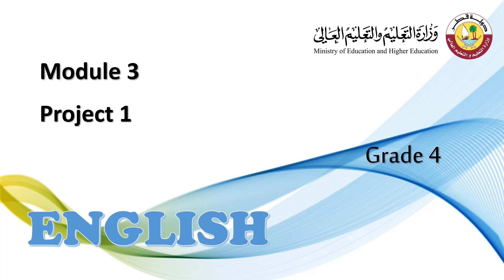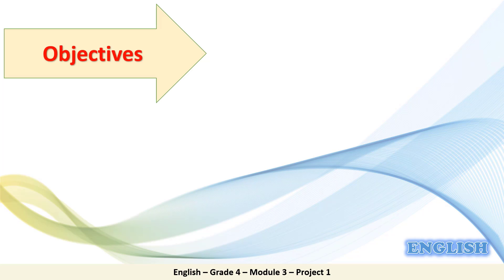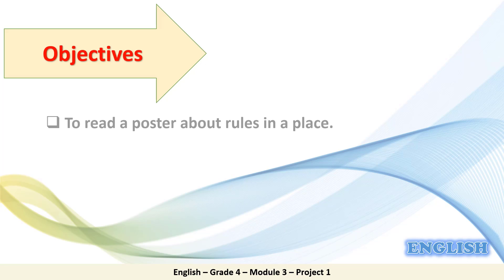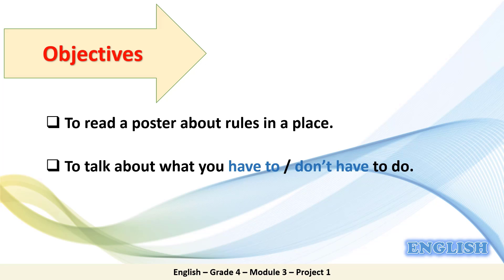Hello grade 4 students. Our lesson today is from Module 3, Project 1. As for the objectives of the lesson, by the end of the lesson, you will be able to read a poster about rules in a place. Also, you will be able to talk about what you have to or don't have to do.